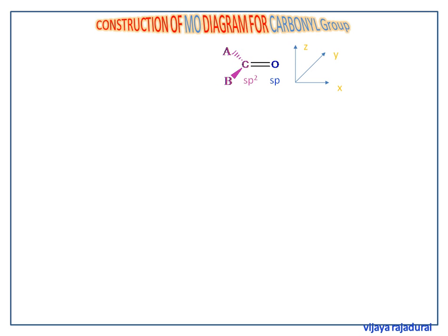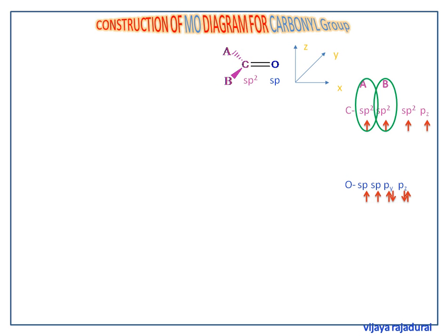Two of the carbon sp2 orbitals are used in bonding to A and B. Oxygen has two sp hybrid orbitals and two unhybridized p orbitals. After forming bonds with A and B, carbon has one sp2 hybrid orbital and one p orbital remaining.